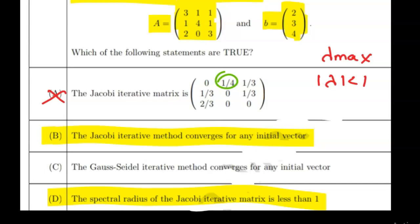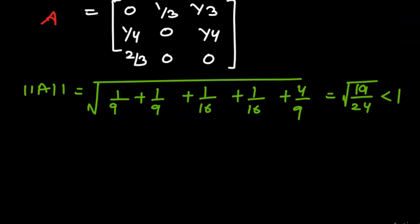For option C, we check the Gauss-Seidel method. For the Jacobi iterative matrix we found, if we look at the respective row sums: the first row sum is 2/3, the next is 2/4 which equals 1/2, and the third is 2/3.